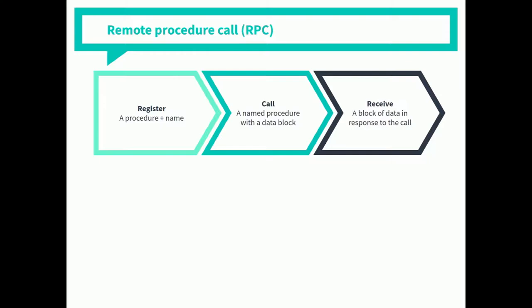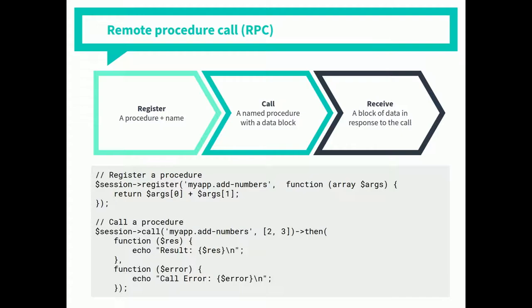A key thing: the code is not executed on the Crossbar server. Some people ask if this is a security hole — essentially sending someone code and running eval on it. Don't do that. This is running on the person's computer. If client A registers a procedure and client B calls it, that code runs on client A's computer. So if you register a procedure called 'mine bitcoin,' people will mine bitcoin on your machine. Here's some PHP code that does the same thing: we register a procedure that adds some numbers together, someone calls it, and we either echo a result or call an error.